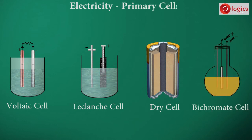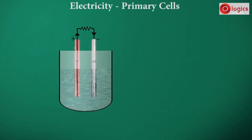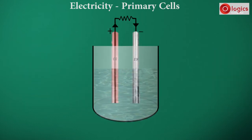Now, let us see what is voltaic cell. This is the first electric cell invented by Volta in the year 1786. Let us see the construction of a voltaic cell.